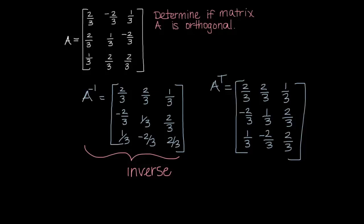And as you can see, my row one, column one position, the two-thirds, is equal to the two-thirds over here. The negative two-thirds is equal to the negative two-thirds. The one-third is equal to the one-third. So these are in fact equivalent.